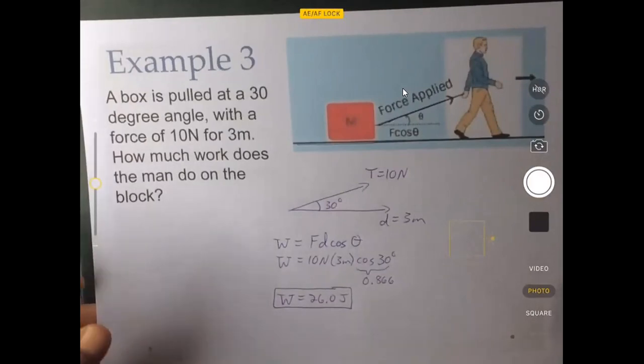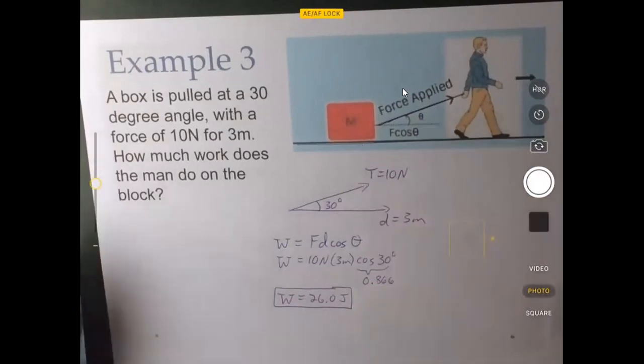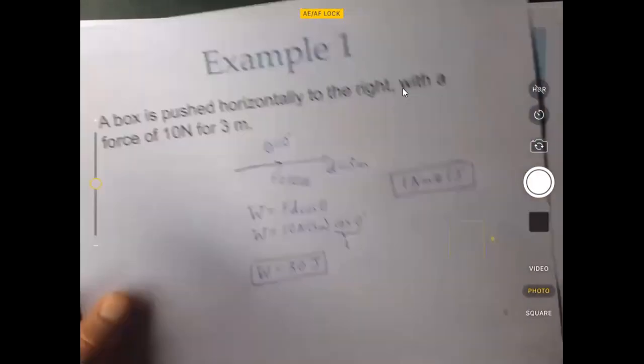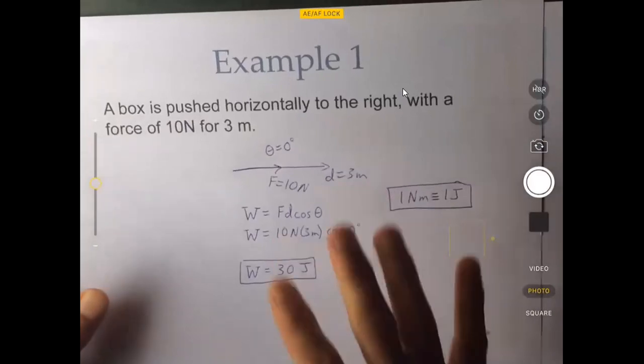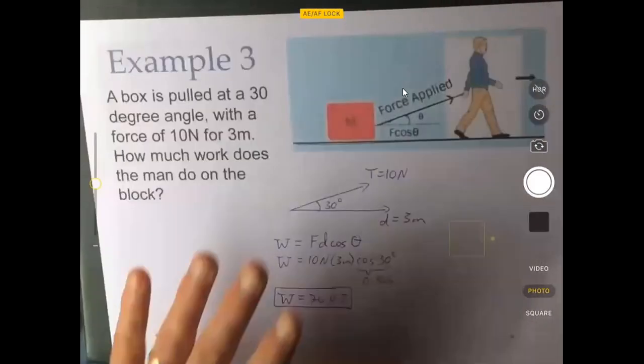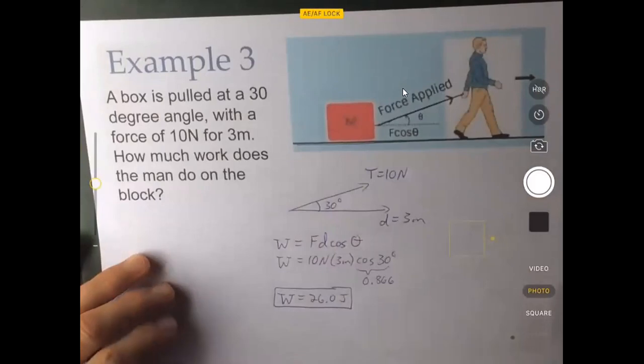So the object still moves three meters, but the work done was less. And what does that really mean? Well, it means at the end of that three meters, this box isn't going to be moving as fast as this box. More kinetic energy will have been put into this box than the one in example three.